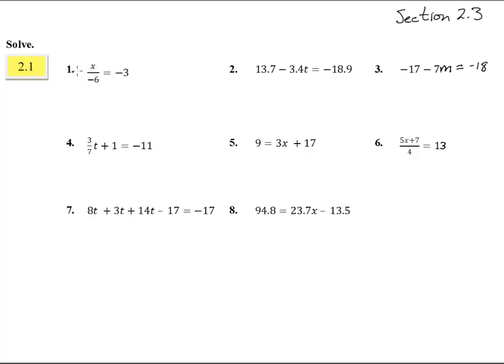x divided by negative 6 equals negative 3. We've got to undo that with a times by negative 6. These guys, gone. x equals negative 3 times negative 6 is a positive 18.